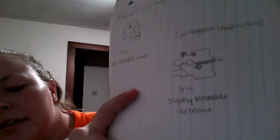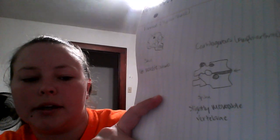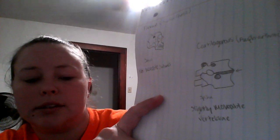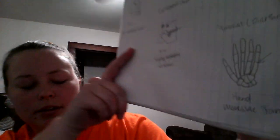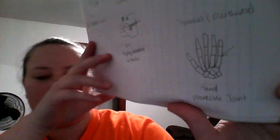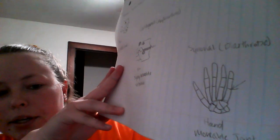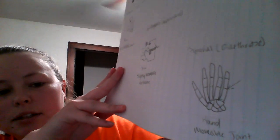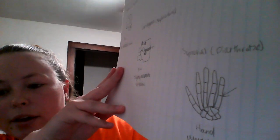I drew the spine and it's basically a vertebrae and it's slightly movable. Then for the third one I drew the hand — basically it's really movable — it's a joint, it's the synovial, diarthrotic one.